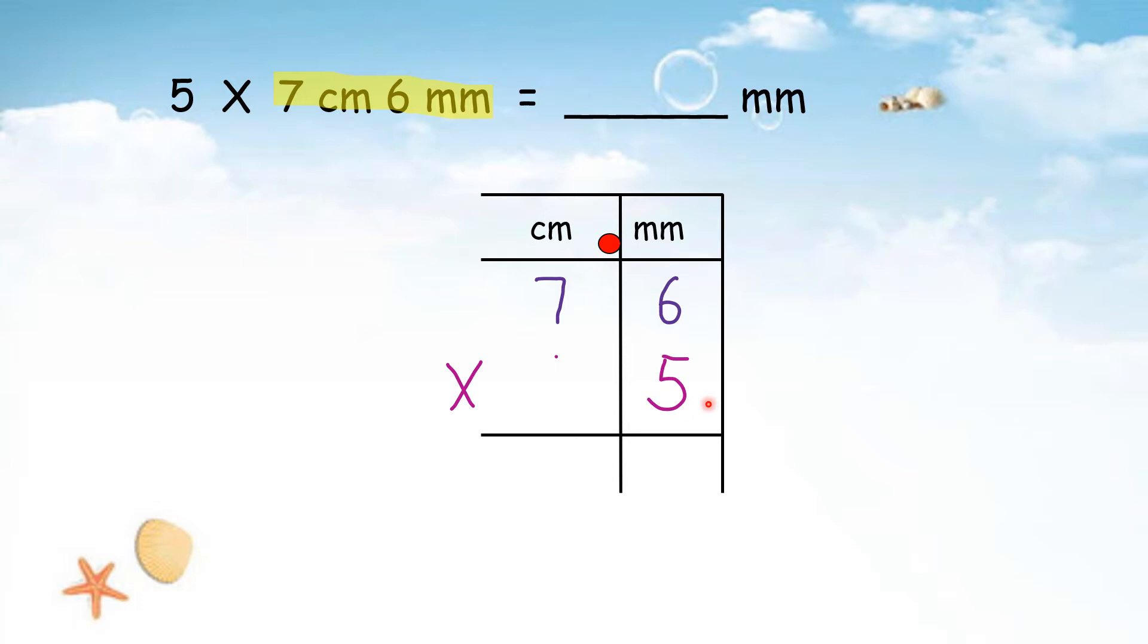Start from the back. 5 times 6, 30. And then 5 times 7, 35. 35 plus 3 on top, so it's 38. Now we check. The final answer is in mm, so we circle mm in 1-1 box. It is without point, no point. So we will write the answer like this: 380 mm.